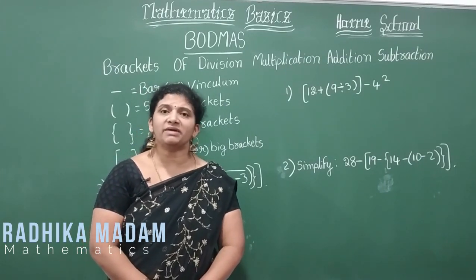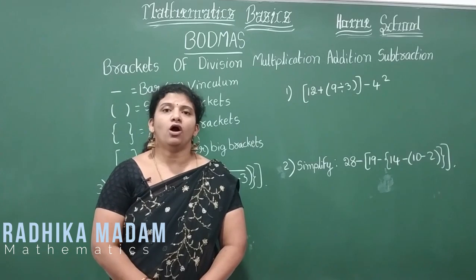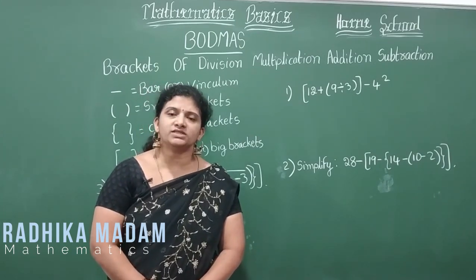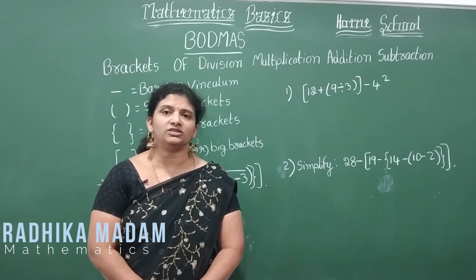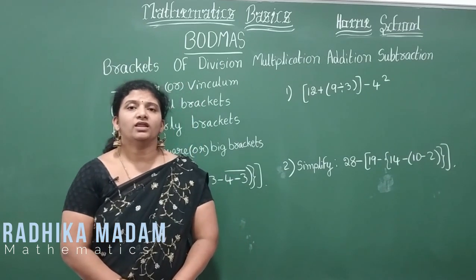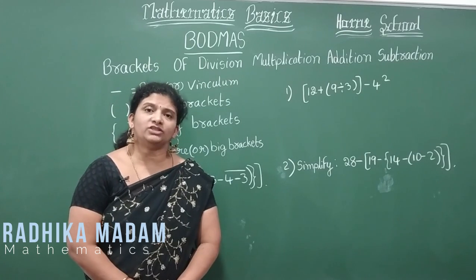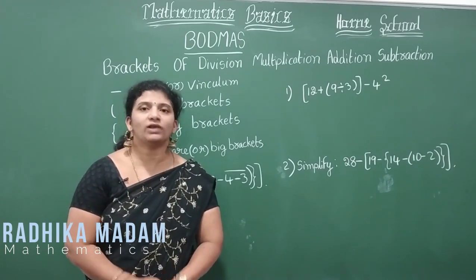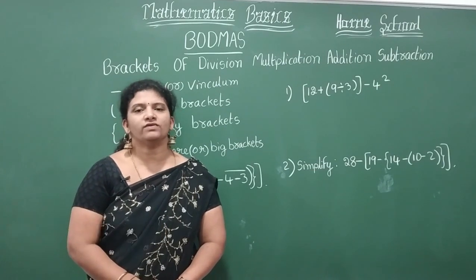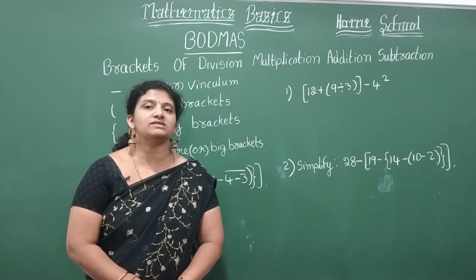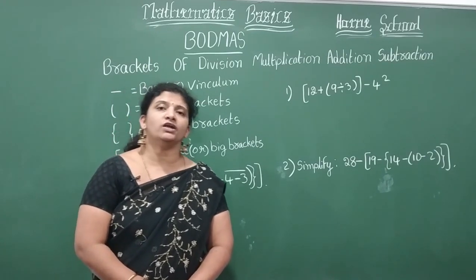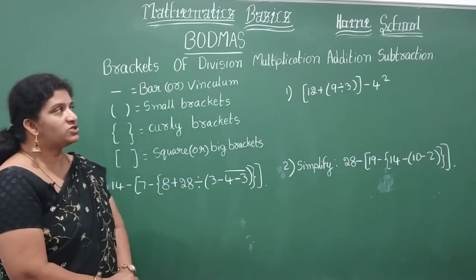So here, some expressions you see here, all types of operations will be there. It may be positive, negative, multiplication, division. Then what should I do first, which one I have to do first? For that I am going to say you in a simplified manner with a BODMAS rule.